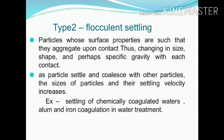Type 2 is flocculant settling. Here, flocculation of particles occurs, increasing their mass, so they settle at a faster rate. The particles are in contact with each other, changing in size, shape, and specific gravity. As particles settle with other particles, their size and settling velocity are affected. An example is settling of chemically coagulated waters — such as alum and iron coagulation in water treatment.